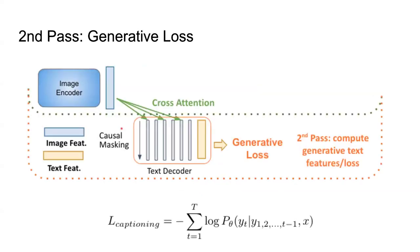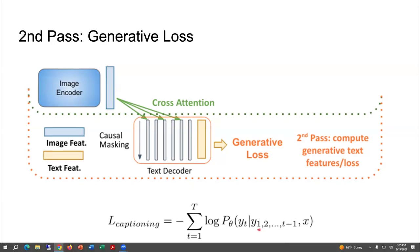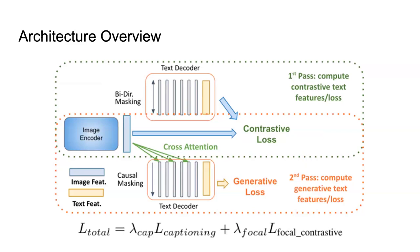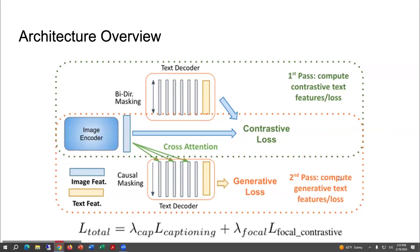In the second pass, you turn on both the cross-attention switch and the causal masking switch, so the model can attend only to tokens that have come before it and also to the embedding generated by the image encoder. You then generate the negative log-likelihood based on the image embedding x and the tokens already seen y_1 to y_{t-1}. This is the entire two-pass architecture — you weigh the losses with parameters lambda_cap and lambda_focal.